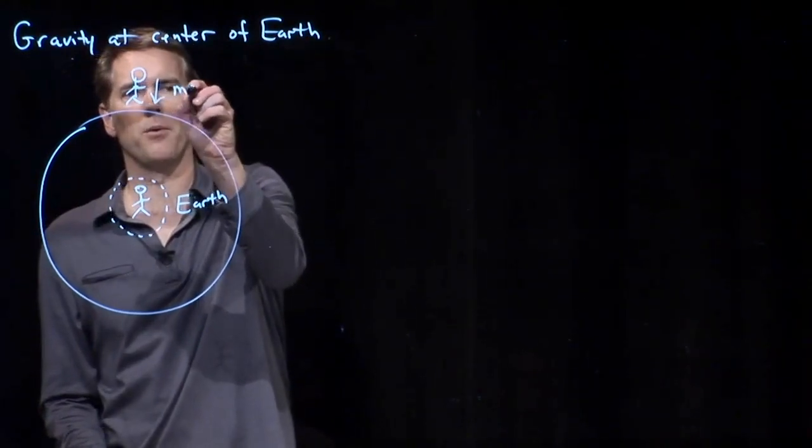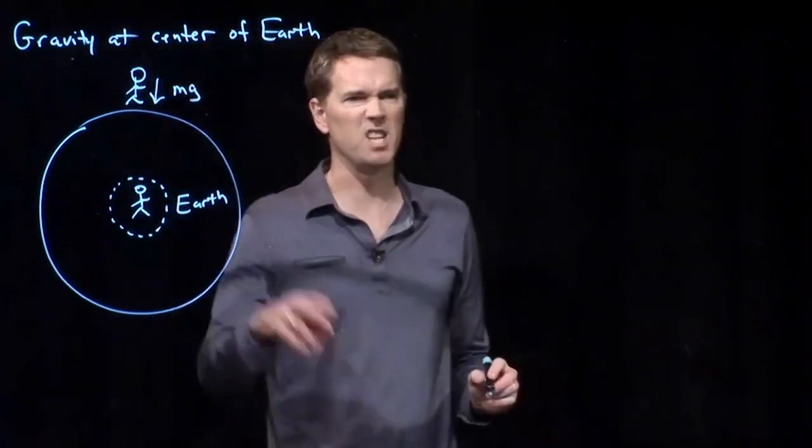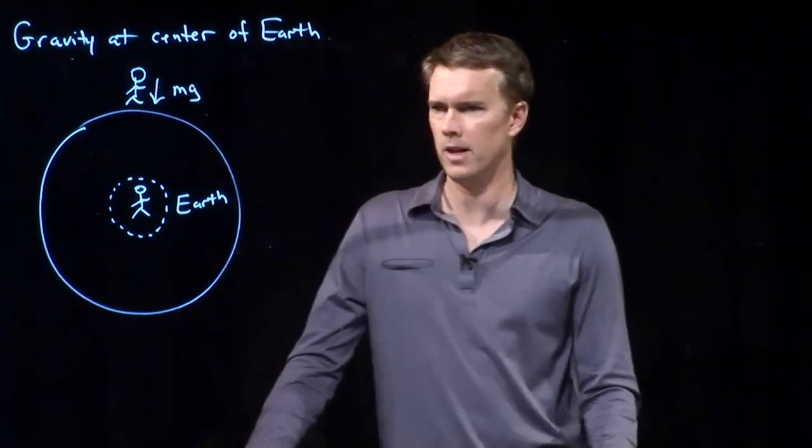Okay. Negative, we draw with an arrow down. It's got a value of g. I have to multiply by my mass, of course. And so it's mg.